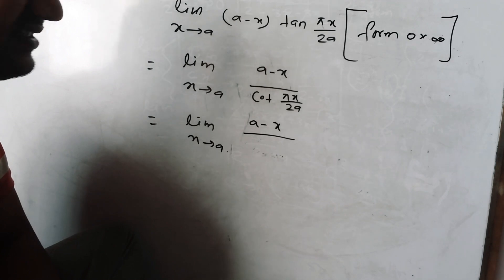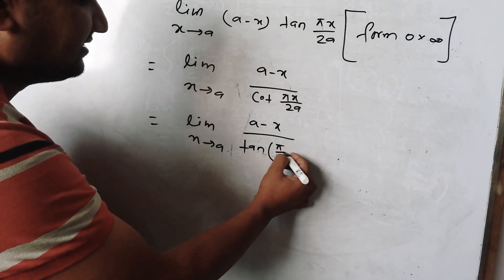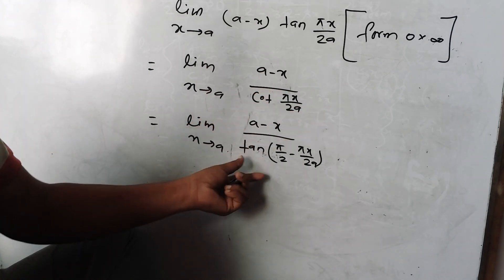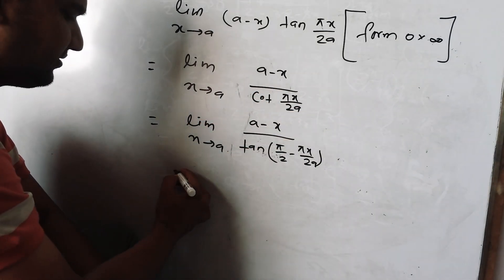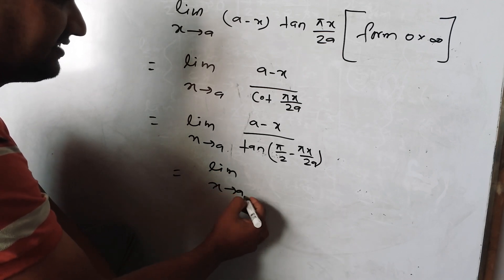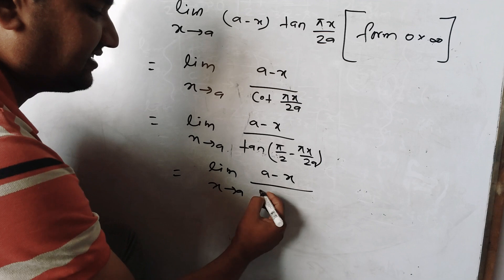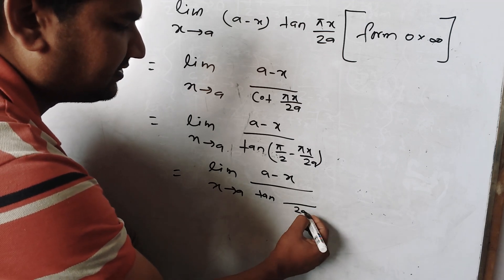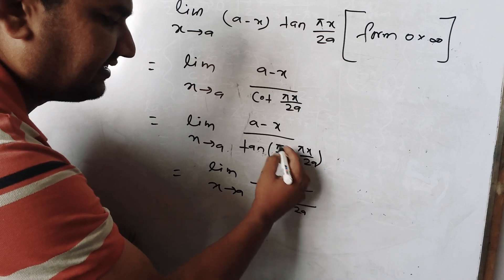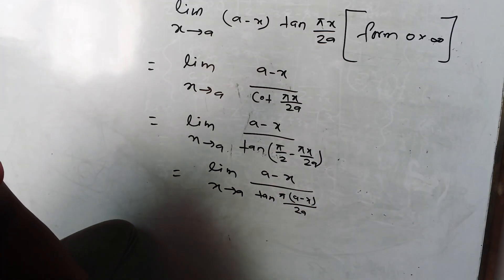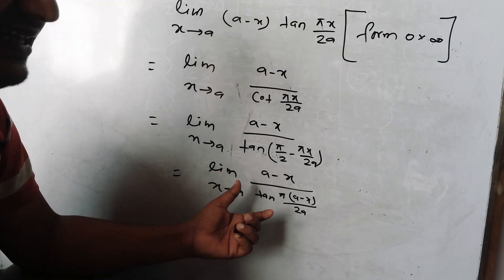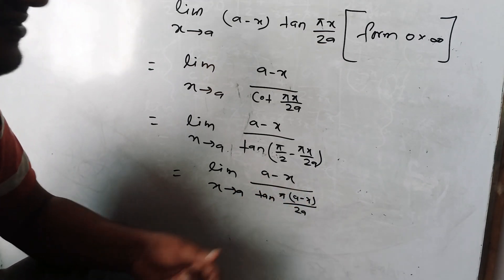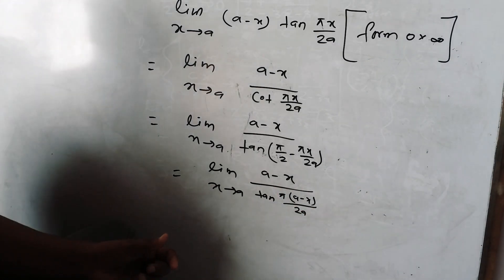Let theta equal (pi x) / (2a). We use the identity for 90 degrees minus theta: tan(pi/2 minus theta). So limit as x tends to a of (a minus x) times tan(πx/2a). We write 2a LCM: pi upon 2a times (a minus x), simplifying the expression.